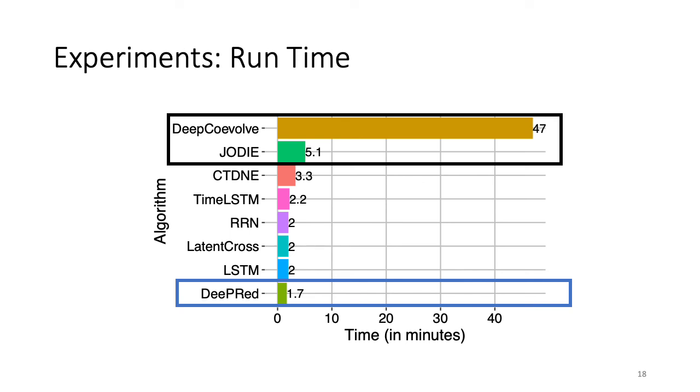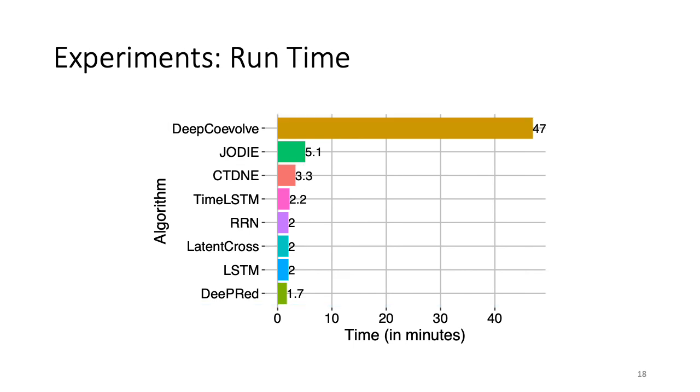We want to highlight that we have borrowed the numbers from Jodi's paper for most of the experiments, including this experiment, because the source code for most of the baselines was not available. For some of them, though, we reproduce the results by rerunning them on our machine. Since Jodi is the second best performing algorithm, and it is the one which has a specialized minibatch algorithm to improve efficiency, we rerun it on our machine to see if there is any difference in terms of computational time. Indeed, there is a difference, and it took 15 minutes to finish a single epoch of training on Reddit dataset on our machine, and this further establishes the efficiency of DeepRed.